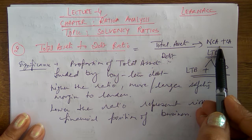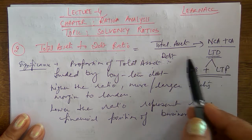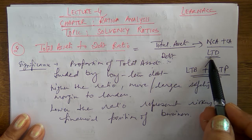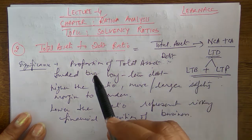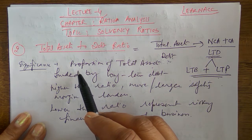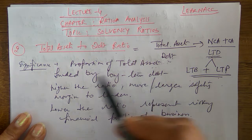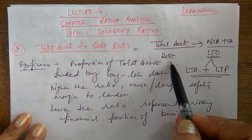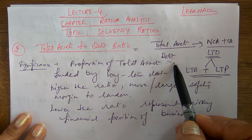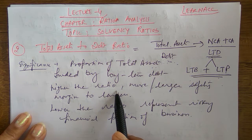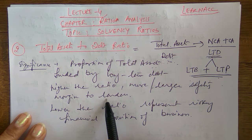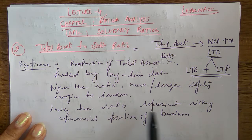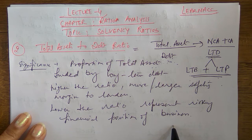To summarize: total asset to debt ratio formula is total assets over debt. Total assets include non-current assets and current assets. Debt means long-term debt, which includes long-term borrowings and long-term provisions. The objective is to measure the proportion of total assets funded by long-term debt. Larger ratio means more safety to lenders; lower ratio represents a risky financial position.